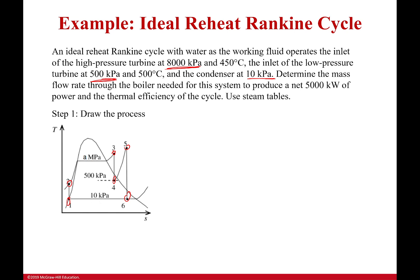Then it gives us temperatures. Going into the high-pressure turbine, it's 8,000 kilopascals and 450°C — superheated, so that's enough. Going into the low-pressure turbine, it's 500 kilopascals and 500°C, also superheated, so that's enough to solve both points. I can solve point 1 because it's a saturated liquid, and point 2 from the change in pressure. Really the only points needing extra work are point 4 and point 6.